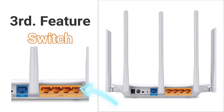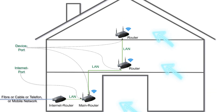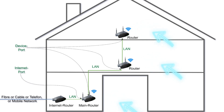The third functionality of a wireless router is a switch. As you can see on the back of the router, it has many Ethernet ports, some of which are used for a local network as a switch. These ports are also used for extending our network to connect a second, third, or fourth wireless access point for different floors.